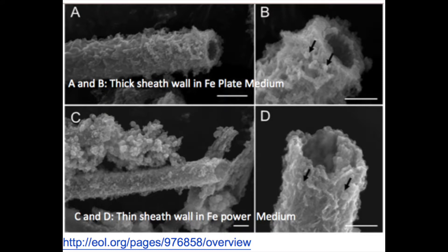The sheaths of the Leptothrix genus are composed of two layers: a thicker outer capsule layer followed by a thinner inner layer, which attaches to the outer layer of the gram-negative cell wall of the bacterium. The sheaths' thickness can vary based on its surroundings. One study found that the sheath wall thickness of a Leptothrix species in iron-plated medium ranged from 200 to 250 nanometers, while in iron-powder medium ranged between 100 and 150 nanometers. The contents of the sheaths can break down various inorganic molecules, specifically transition metals, such as iron and manganese.